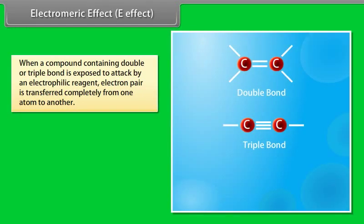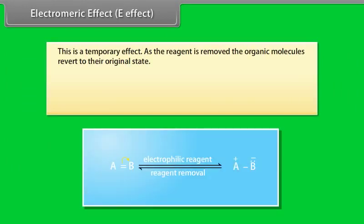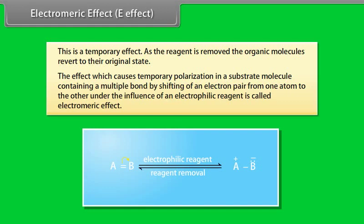Electromeric effect (E effect): when a compound containing a double or triple bond is exposed to attack by an electrophilic reagent, the electron pair is transferred completely from one atom to another. The atom to which the electron pair is transferred becomes negatively charged and the other atom becomes positively charged. This is a temporary effect — as the reagent is removed, the organic molecule reverts to its original state. This temporary polarization in a substrate molecule containing a multiple bond due to shifting of an electron pair under the influence of an electrophilic reagent is called the electromeric effect.